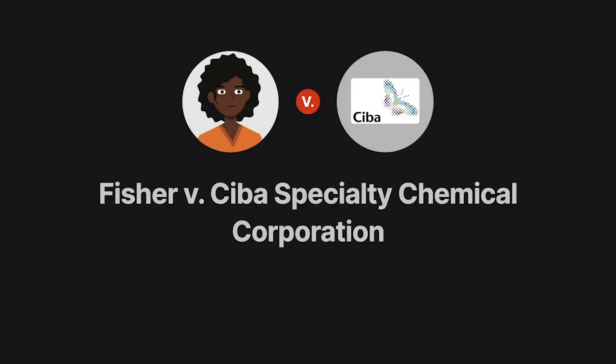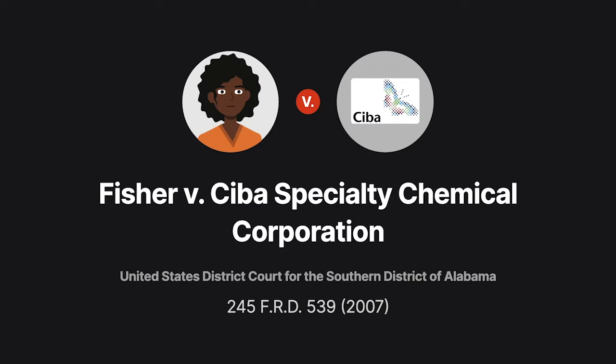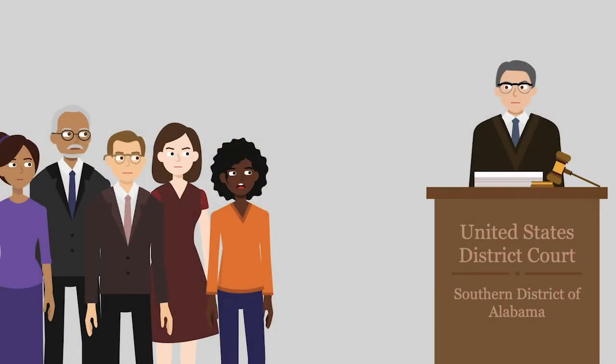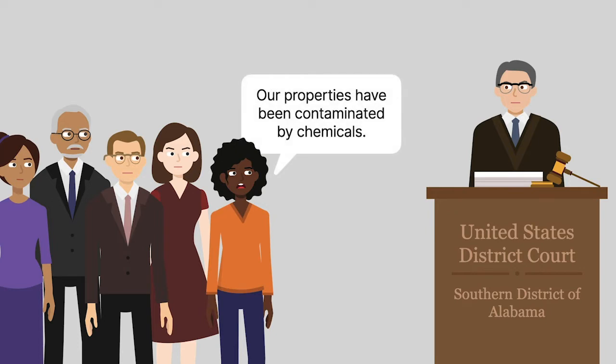In Fisher v. Ciba Specialty Chemical Corporation, the court pondered a motion to sever in the context of five plaintiffs alleging the same chemical contamination by the same defendant. Jesse Fisher and four other Alabama property owners alleged that Ciba's chemical plant had contaminated their properties with DDT. They joined forces and sued.